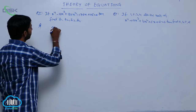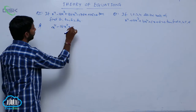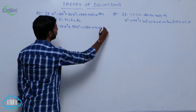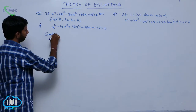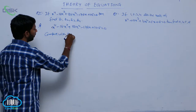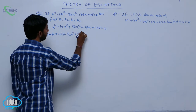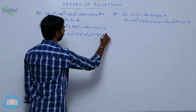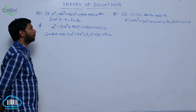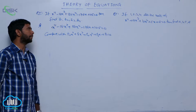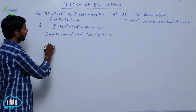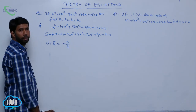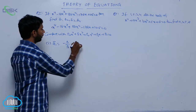The given equation is x^4 minus 16x^3 plus 86x^2 minus 176x plus 105 equals 0. Compare with the standard form p0*x^4 plus p1*x^3 plus p2*x^2 plus p3*x plus p4 equals 0. The first result: s1 equals the sum of roots equals minus p1 by p0, which equals 16.